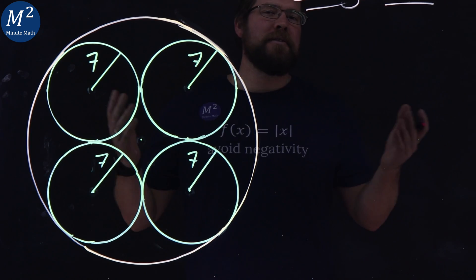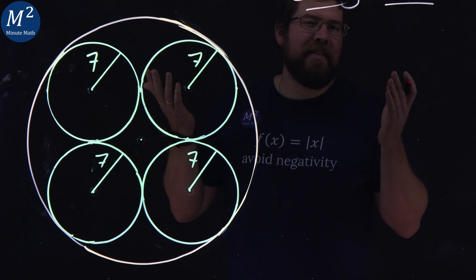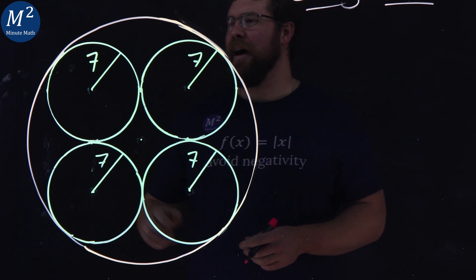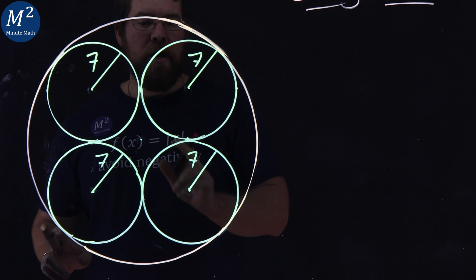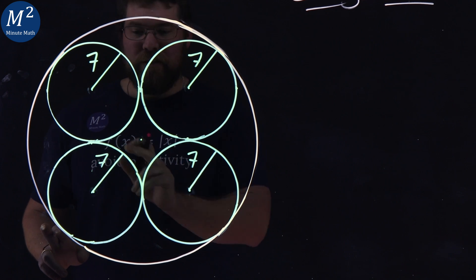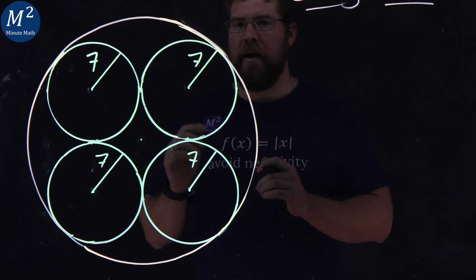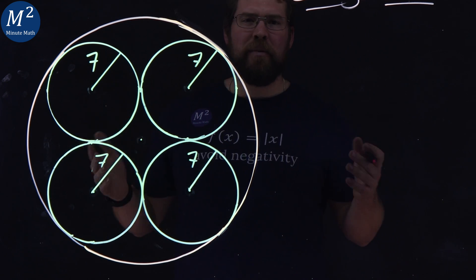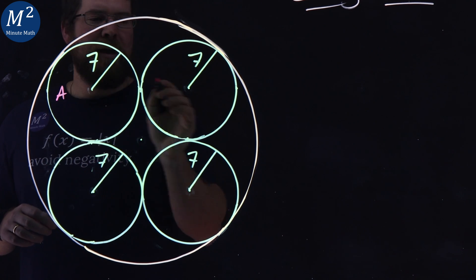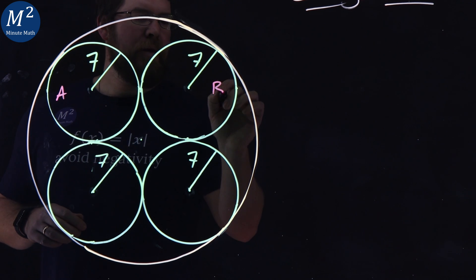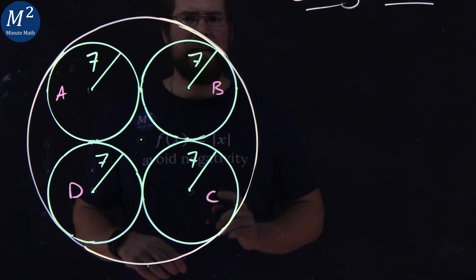All right, first thing I'm noticing here: let's notice the tangents. We've got tangent after tangent of the circles on the inside there. Let's label these circles as well — we have A, B, C, and D.